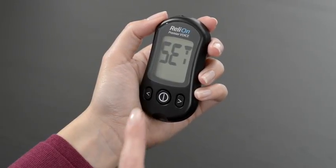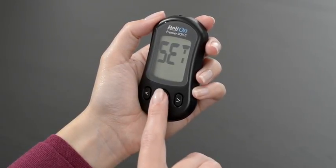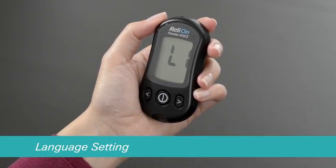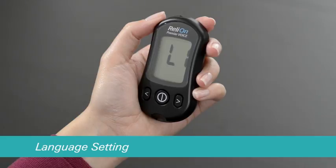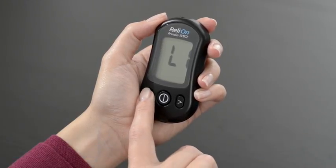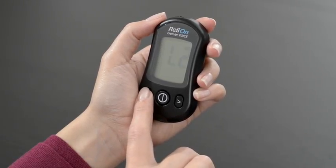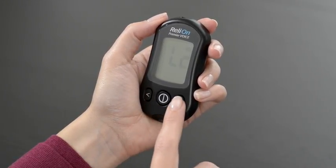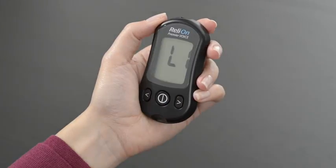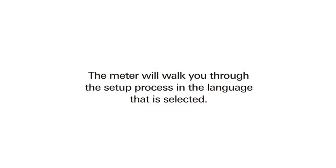Press the center button again to enter the language setting. Use the left or right arrow buttons to select L2 for Spanish or L1 for English. The meter will walk you through the setup process in the language that is selected.